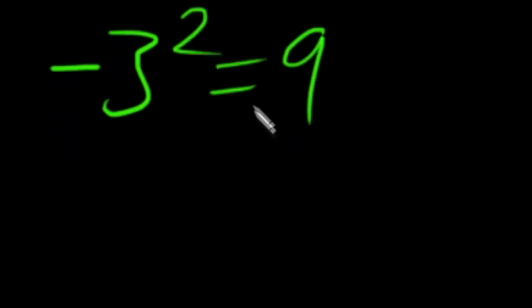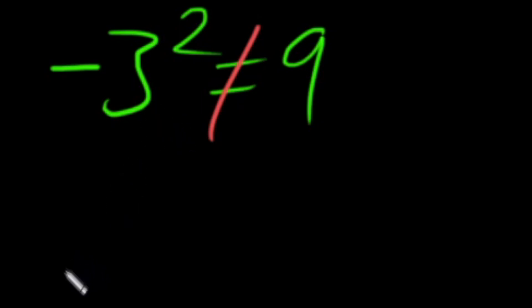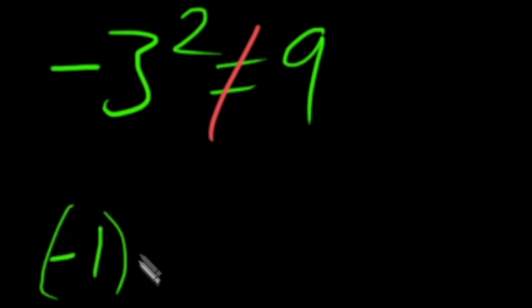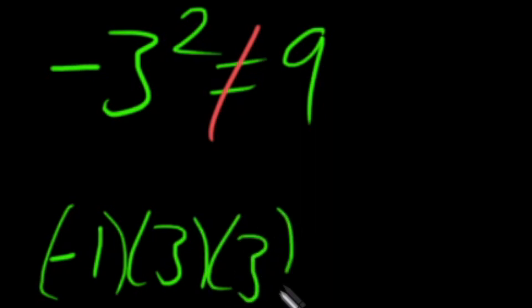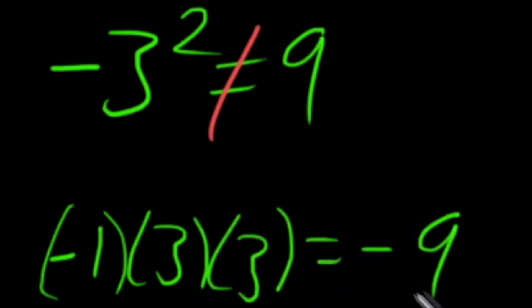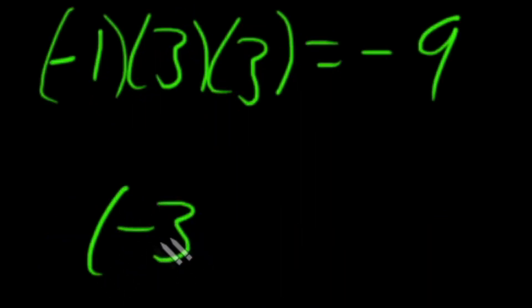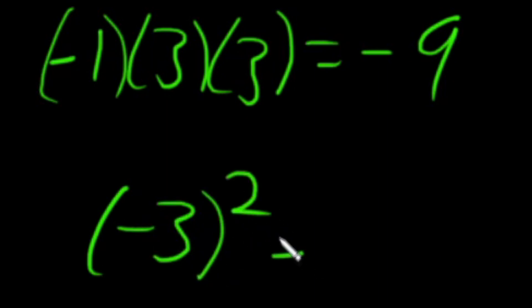Number 1. Negative 3 squared equals 9, right? Nope. Why? Because of order of operations. Written like this, that's the same as negative 1 times 3 times 3, which would equal negative 9. However, if we had negative 3 in parentheses and then squared, it would equal 9.